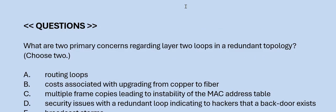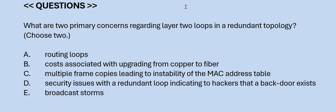Next question: What are the two primary concerns regarding layer 2 loops in a redundant topology? Choose two. Option A: routing loops. Option B: cost associated with upgrading from copper to fiber. Option C: multiple frame copies leading to instability of the MAC address table. Option D: security issues with a redundant loop indicating to hackers that a backdoor exists. Option E: broadcast storms. The correct answers are Option C and E.